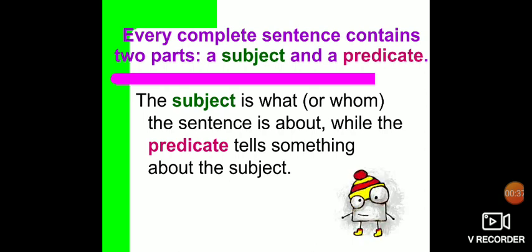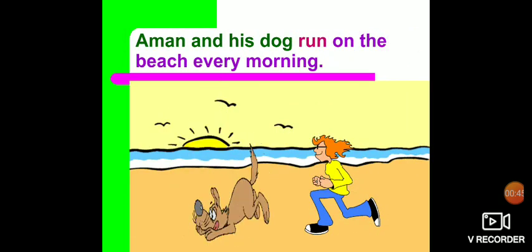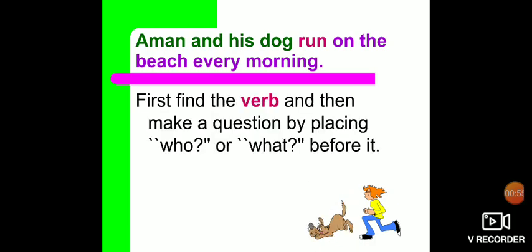Now we are going to learn how to find a subject and how to find a predicate in a sentence. Let's take an example: 'Aman and his dog run on the beach every morning.' We will first find the verb and then make a question by placing who or what before it. In order to find the subject, our first thing is to find the verb in the sentence.